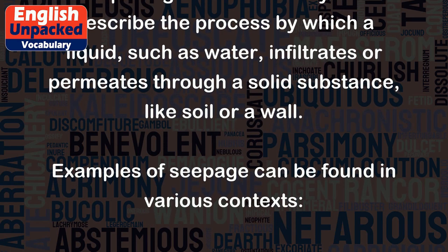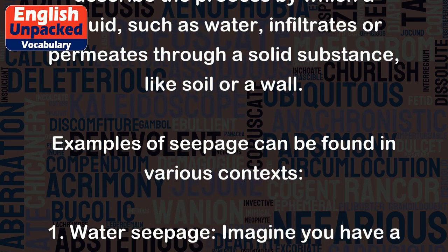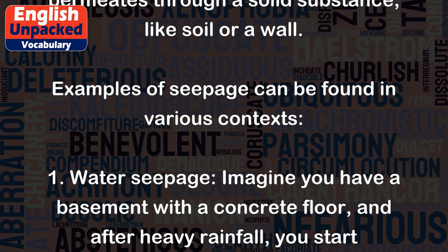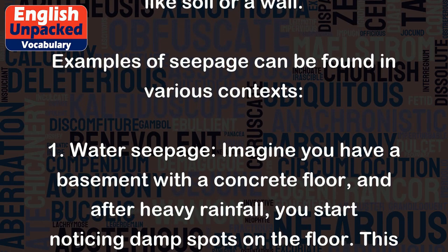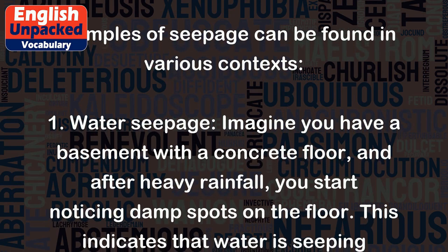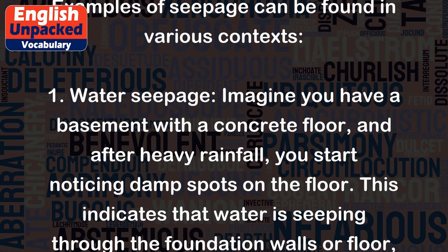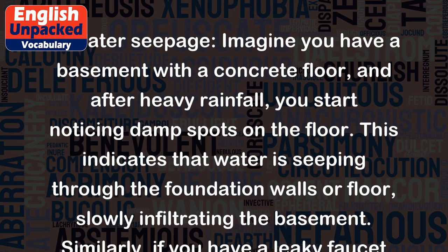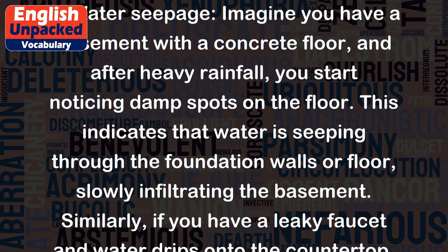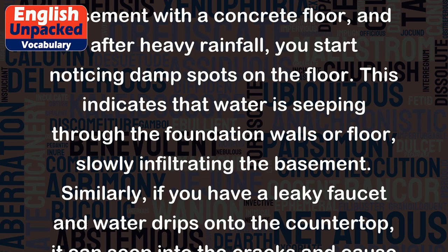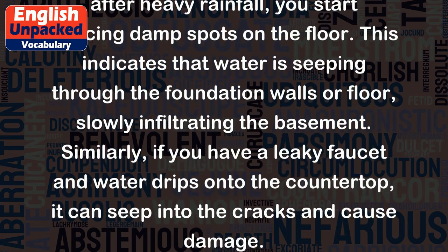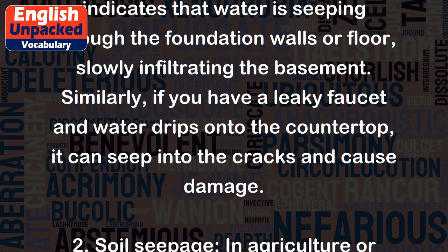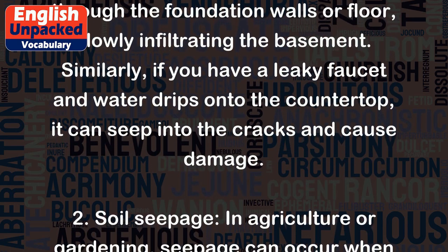Examples of seepage can be found in various contexts. 1. Water seepage: Imagine you have a basement with a concrete floor, and after heavy rainfall, you start noticing damp spots on the floor. This indicates that water is seeping through the foundation walls or floor, slowly infiltrating the basement. Similarly, if you have a leaky faucet and water drips onto the countertop, it can seep into the cracks and cause damage.